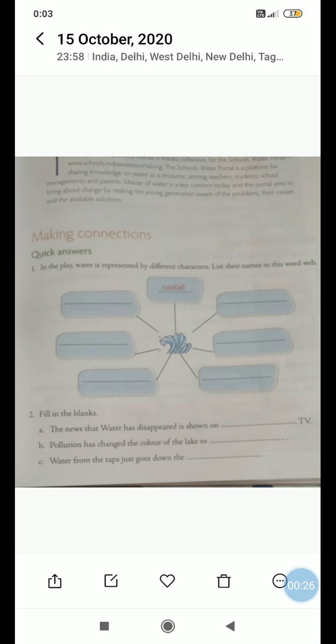The words I am using, it is very obvious that the news that water is dissipated shown on Earth TV. Which TV? Earth TV. And the second one is pollution has changed the color of lake to grey sludge.